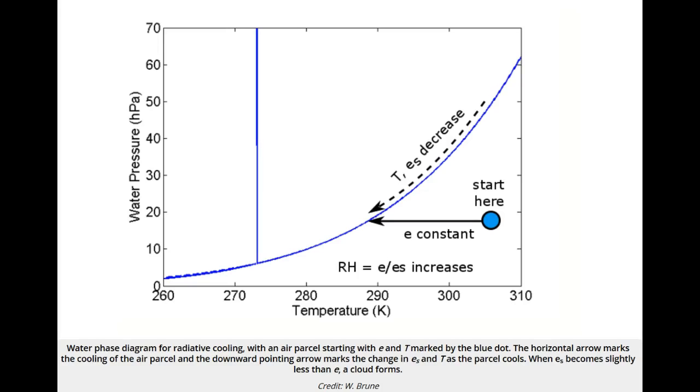Clouds will not form unless the air becomes supersaturated, meaning that its relative humidity is slightly greater than 100%, or to put it another way, its supersaturation is greater than zero.